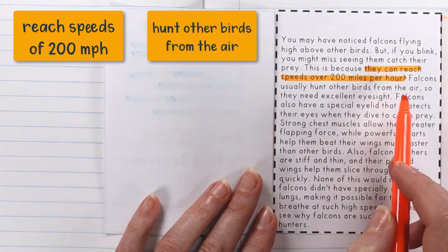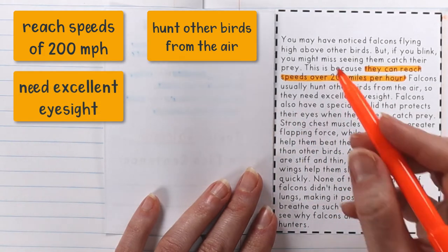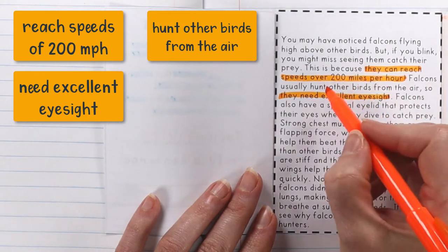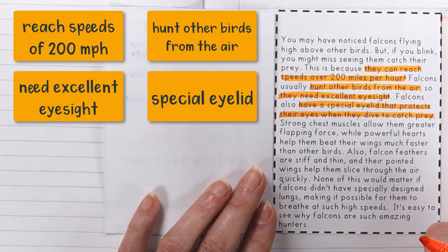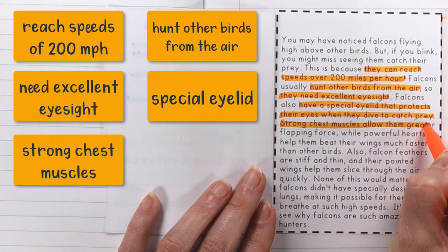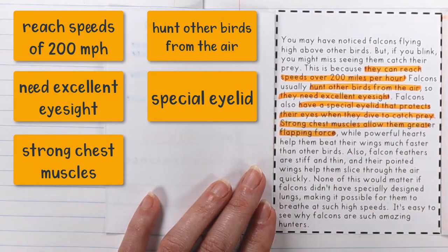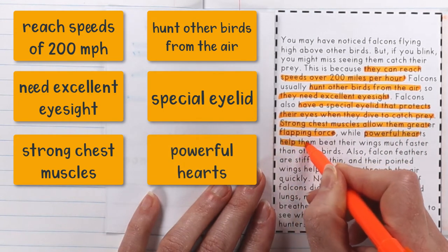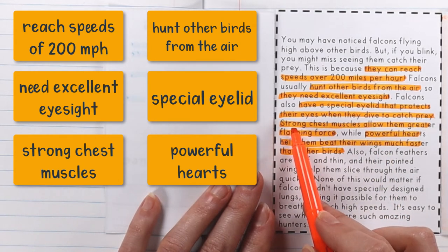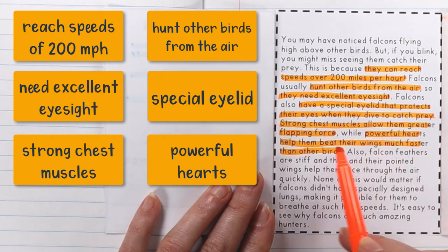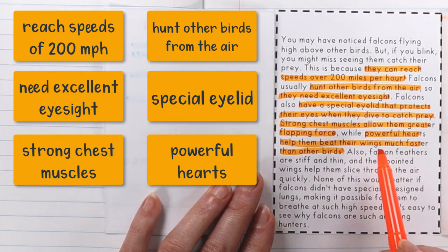It says falcons usually hunt other birds from the air, so they need excellent eyesight — they've got to have this because they're hunting birds from the air. Falcons also have a special eyelid that protects their eyes when they dive to catch prey. They need strong chest muscles, which allows them greater flapping force — they wouldn't be able to flap the way they need to in order to fly that fast. Powerful hearts help them beat their wings much faster than other birds; without powerful hearts they couldn't pump that blood around as fast. Even though this is one sentence, it's really two details: strong chest muscles and powerful hearts.